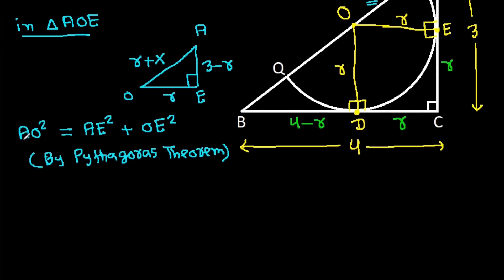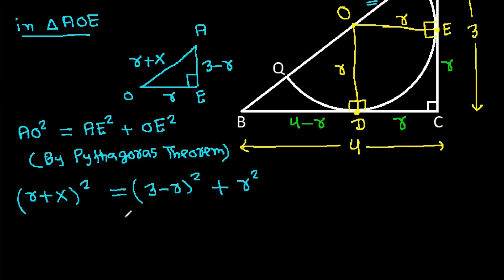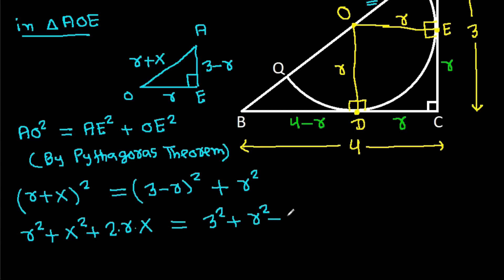So (R plus X) squared equals (3 minus R) squared plus R squared. Expanding: R squared plus X squared plus 2RX equals 9 plus R squared minus 6R. The R squared terms cancel, giving X squared plus 2RX equals 9 minus 6R.